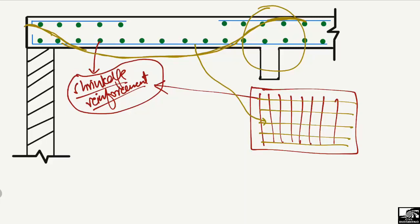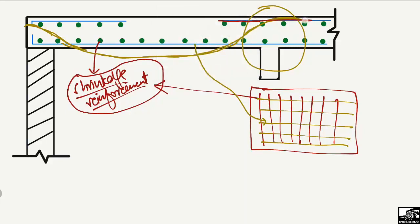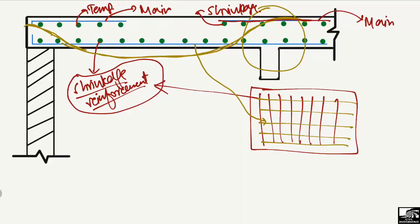Again, we have two types of reinforcement: the main reinforcement for taking the load, and the shrinkage or temperature reinforcement to take the shrinkage or temperature stresses. This applies at both the top and bottom of the slab section.